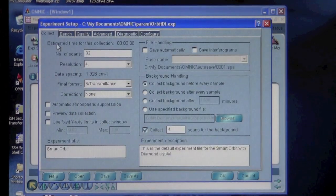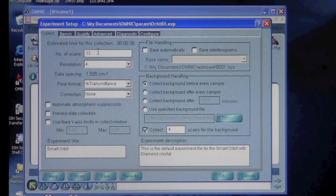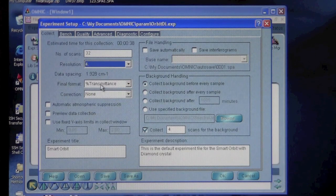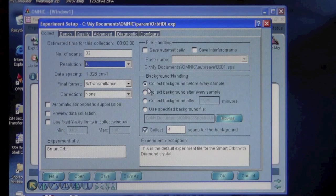Now you can go back to the Collect panel. On this tab are the settings for how we want to collect the data. You can set how many scans you want, the resolution, the format, other parameters down here, and also the background. Currently, it's set to collect a background before every sample.